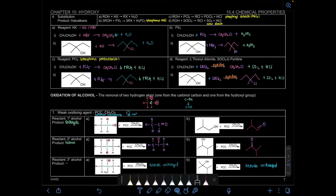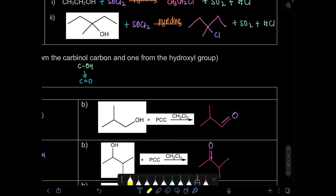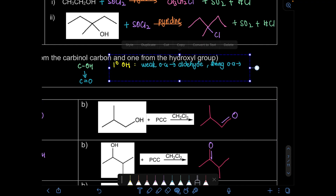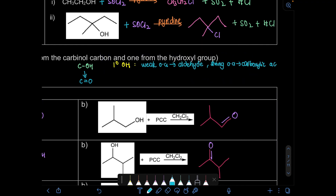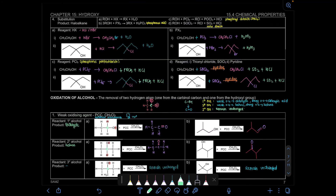Now let's write the summary for the oxidation reaction. For primary alcohol with a weak oxidizing agent (PCC/CH2Cl2), it changes to aldehyde. With a strong oxidizing agent, it becomes carboxylic acid. For secondary alcohol, both weak and strong give ketone. For tertiary alcohol, there's no reaction — the reaction remains unchanged. That's the summary for oxidation of alcohols.